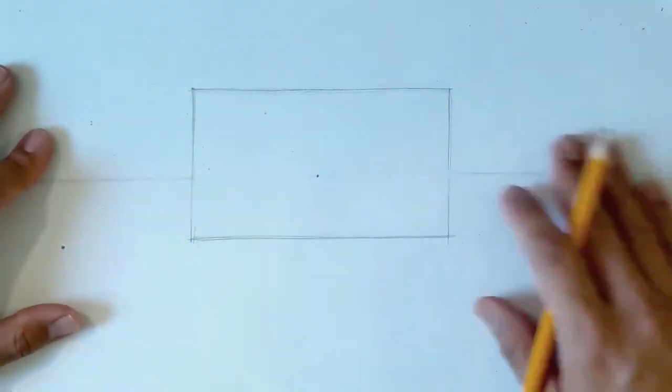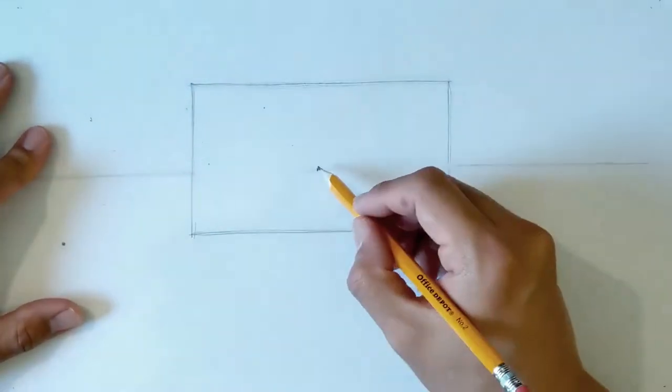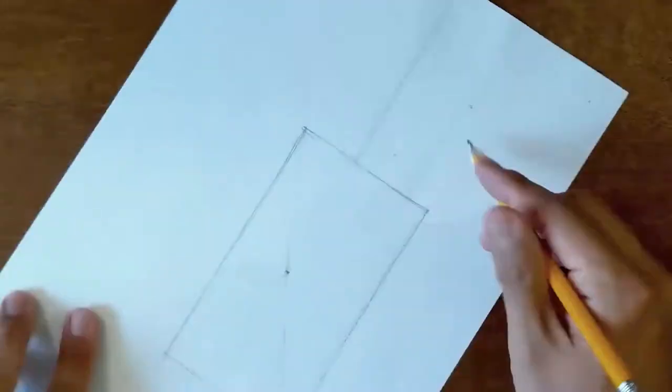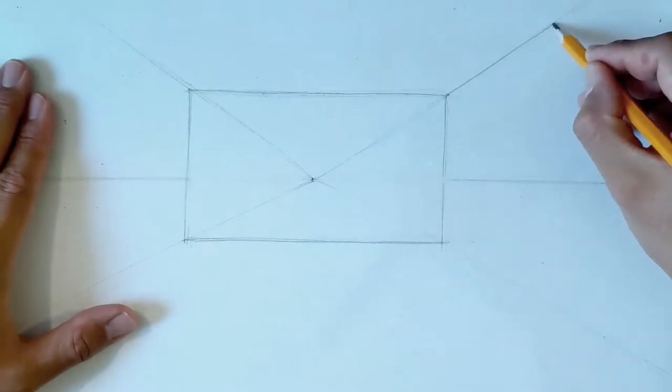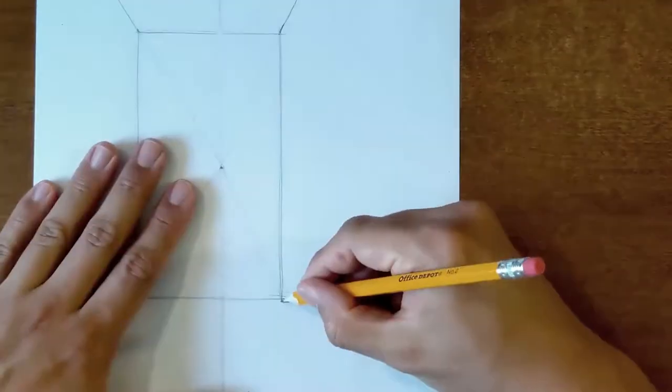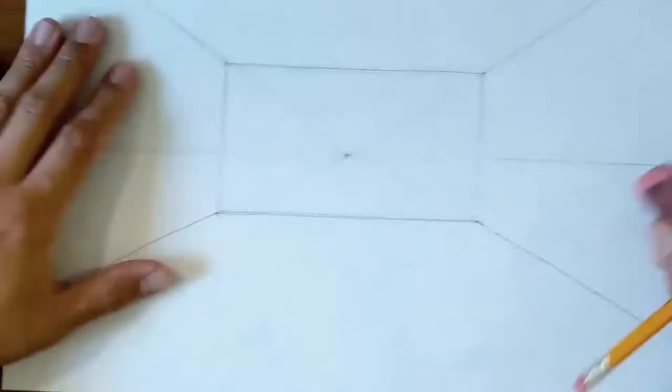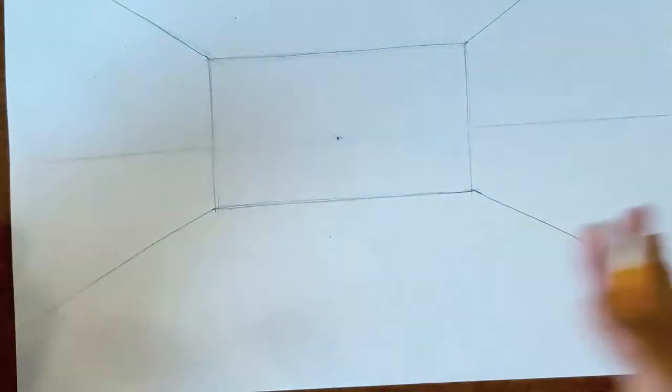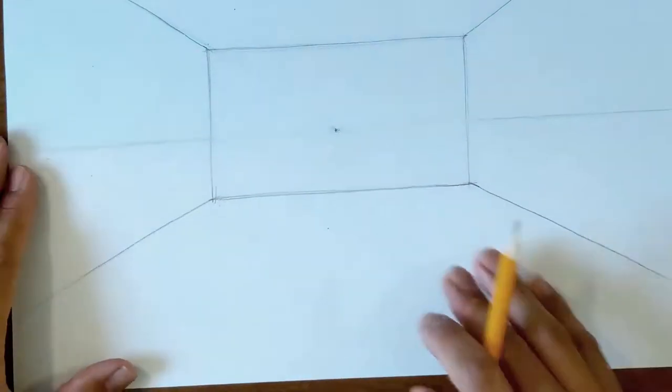So you're first starting with the back wall. That's the first rectangle you're making, and these lines you're seeing right now are construction lines that represent the corners of the left and right walls as well as the ceiling that are coming towards you. Now you see a little bit more of a sense of there being an enclosure.